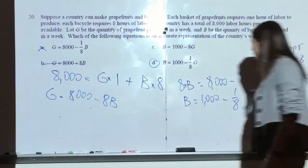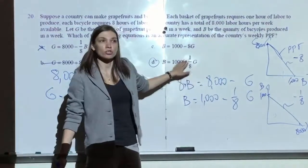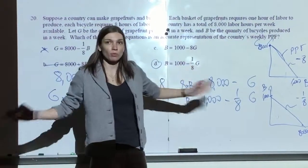So, if B is on the y-axis, then I'm going to have an intercept of 1,000, which I do, and a slope of negative 1/8. And I assume that sounds fair. Either way would work.